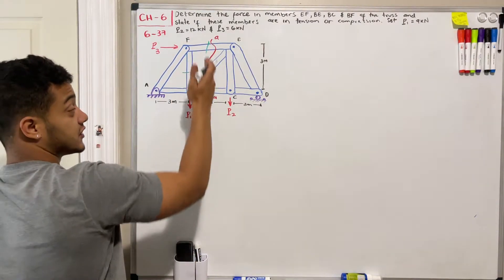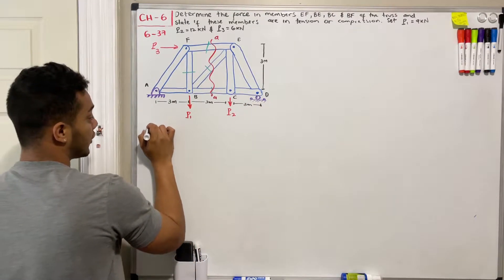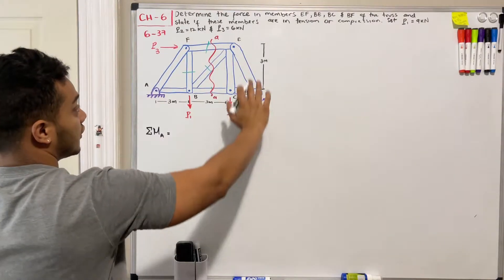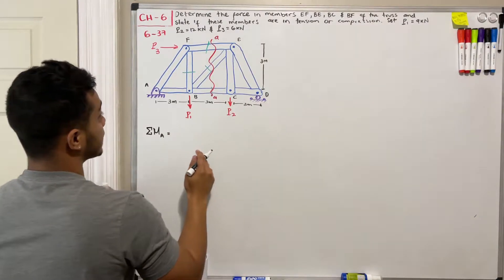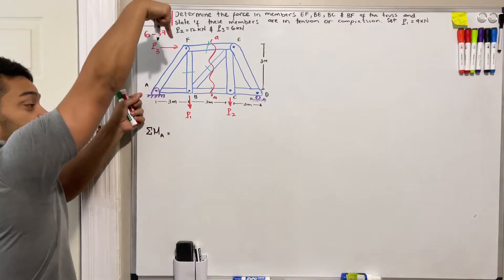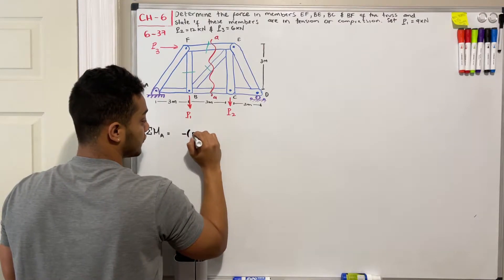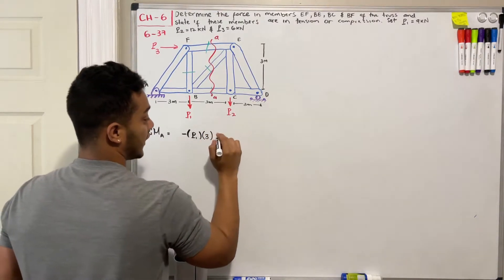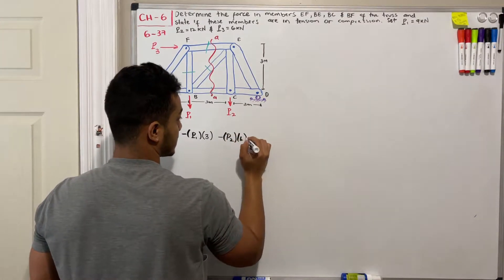Before even doing section AA, I'm going to solve for my reaction force at D. To do that, I'm going to apply the sum of moments about point A of the overall truss without the cut. Starting with P1: if we pin the truss at A and push down, the truss rotates clockwise — which I assume negative — so negative P1 multiplied by 3 meters, then negative P2 multiplied by 6 meters.